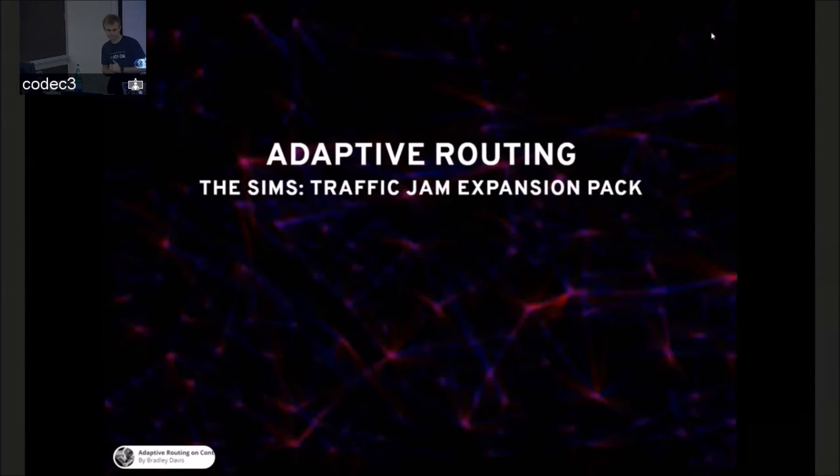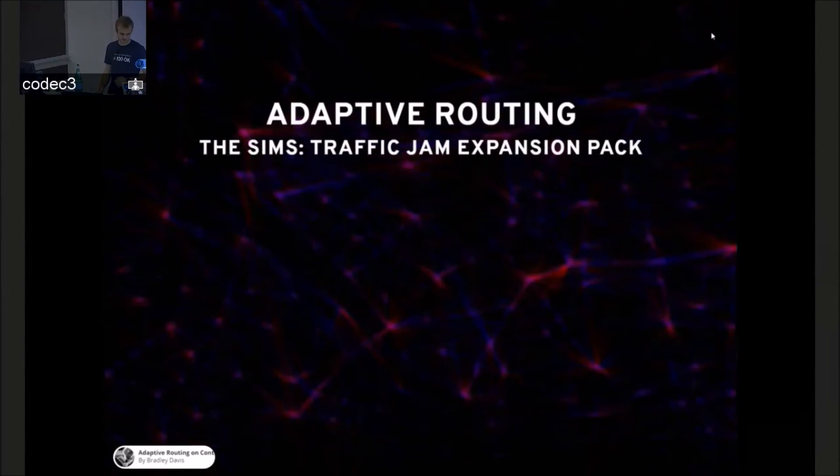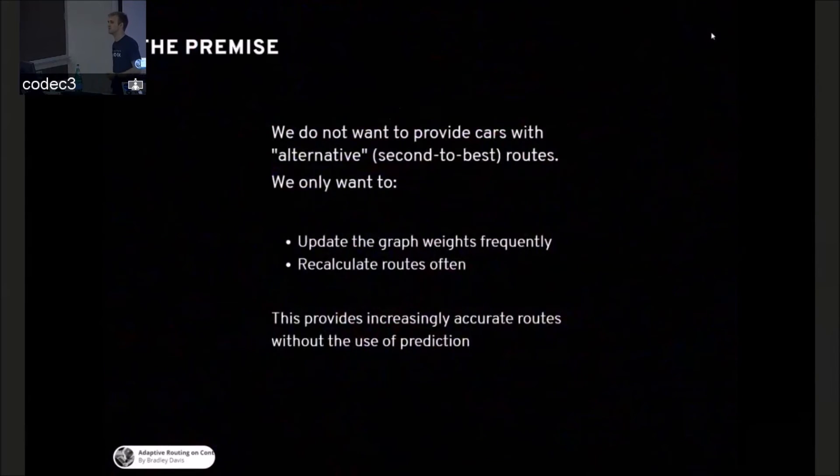So what about the adaptive routing and how do we use the information from the cars? The premise is that we don't want to provide cars with alternative routes. That's something that currently happens a lot. We know what the shortest path is, but we're going to give you the second shortest or a different one just because we think something's wrong with the shortest one right now. We want to update the graphs frequently and recalculate the routes very often. And this provides increasingly accurate routes without the use of prediction. If you get a fresh route with very new traffic data every time you hit an intersection, there's very little need to predict the future.